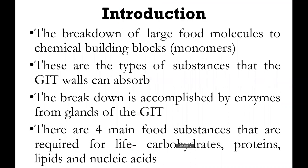Introduction to digestion and absorption: the breakdown of large food molecules to chemical building blocks. The main reason why we digest is to break down the large food molecules into chemical building blocks called monomers. Monomers are the ones that can be absorbed by the mucosal cells. The mucosal cells don't have the capacity to absorb larger molecules, so they have to be digested into the building blocks called monomers, and these monomers will be absorbed. There are channels that are responsible for absorption.